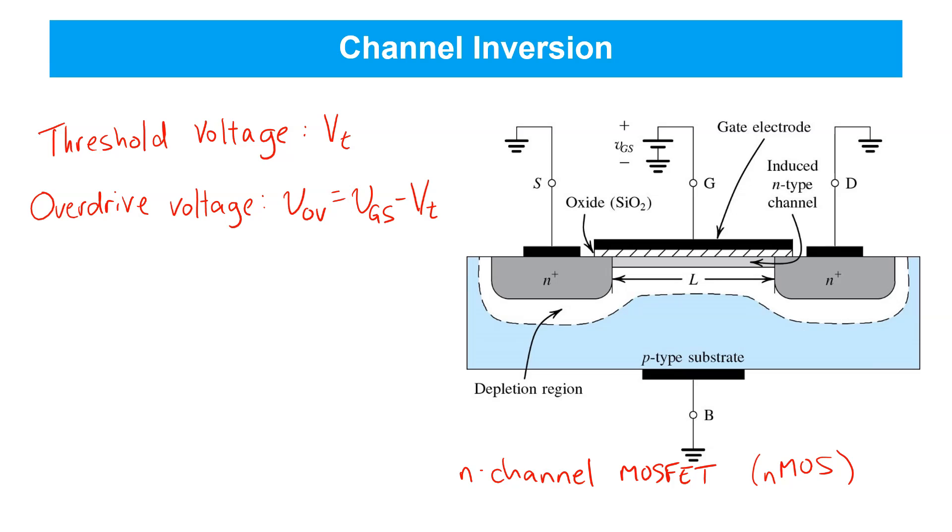We also define a per-unit area capacitance for the parallel plate capacitor formed between the gate and the channel. We use the symbol C-ox to denote this per-unit area capacitance. And it's an important parameter of MOSFET because it gives us a feel for how strong the field effect is.